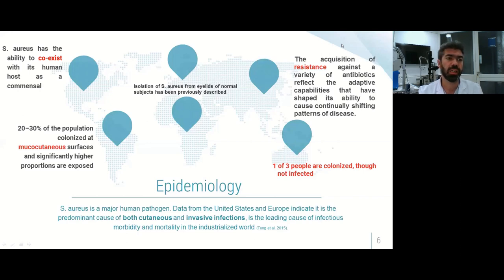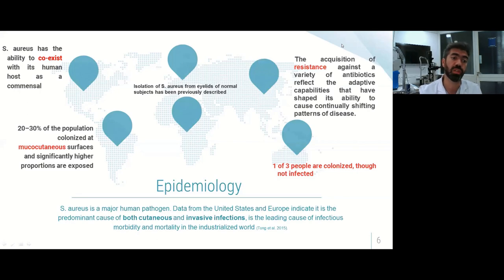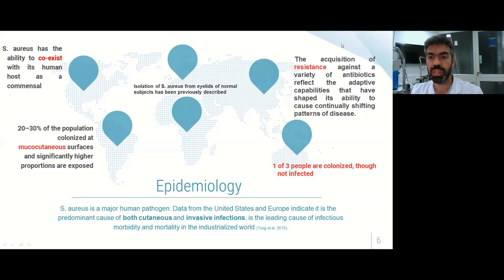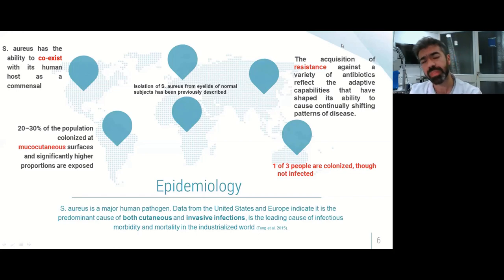If we talk about how it affects our eyes, this bacteria can coexist with humans as a commensal. Between 20 and 30 percent of the population has colonized mucocutaneous surfaces, and a much higher proportion has been exposed to it. The isolation of staphylococcus from the eyelids of normal subjects has been previously described. The acquisition of resistance against various antibiotics reflects the adaptive capability of these bacteria.